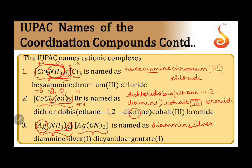As this is a cationic complex, we call the central metal silver and then write its oxidation number. Coming to the anionic sphere — as this is an anionic complex, we first write the ligand name, dicyanido. When we come to the central metal, we use the name argentate and write its oxidation number.